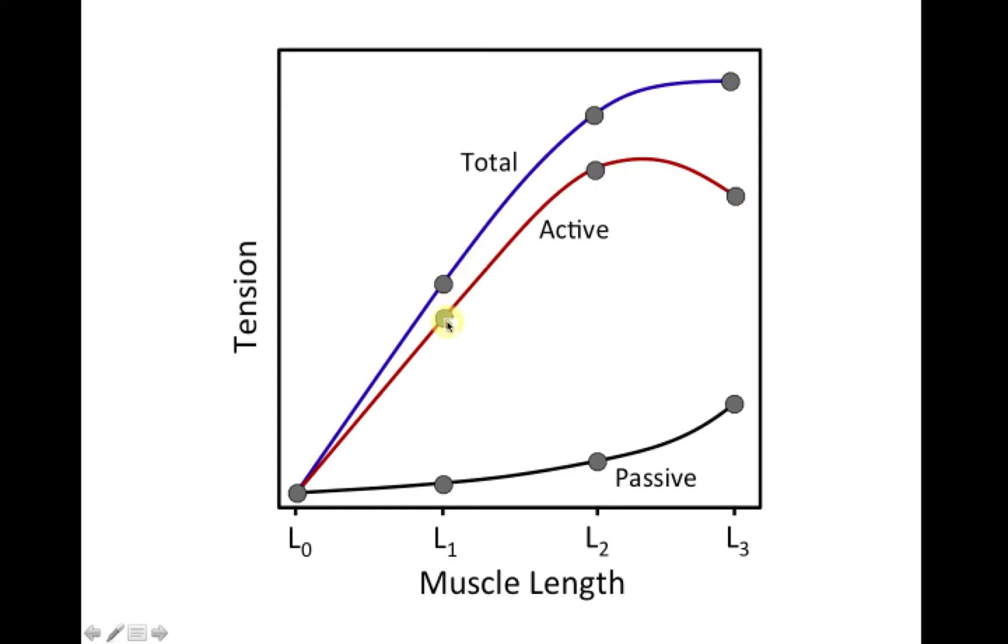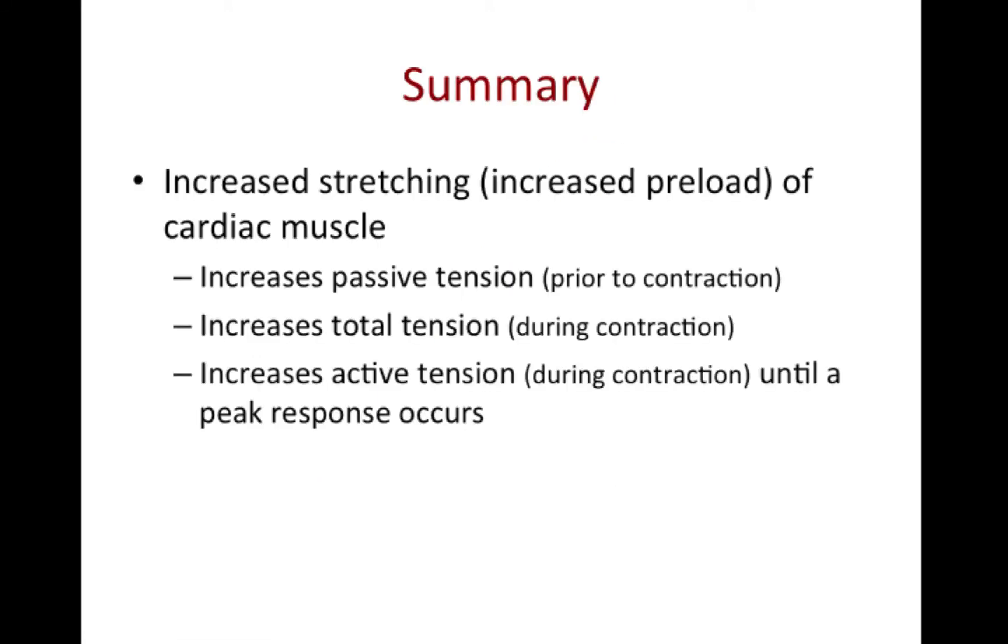Normally, the heart is working on this region of the active length-tension curve, meaning that as you increase the preload length of the muscle fibers prior to contraction, there will be an increase in the active tension development. In summary, increased stretching, which represents an increase in preload on the muscle, will first increase the passive tension prior to contraction. Then increased stretching will increase the total tension during contraction. Finally, increased stretching increases active tension until a peak response occurs.